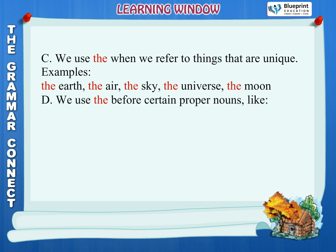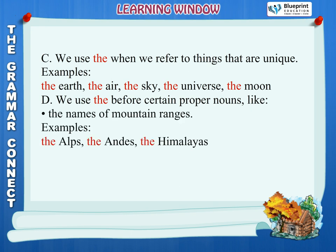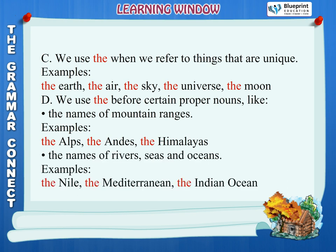Rule D: We use the before certain proper nouns like the names of mountain ranges. Examples: the Alps, the Andes, the Himalayas. The names of rivers, seas, and oceans. Examples: the Nile, the Mediterranean, the Indian Ocean.